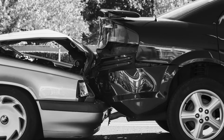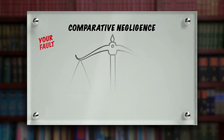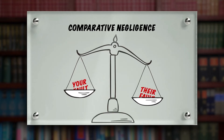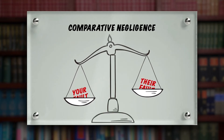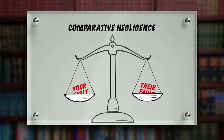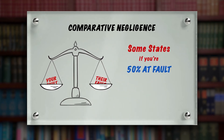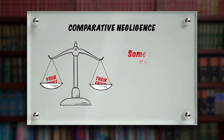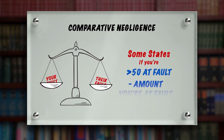In most states, a jury is asked to weigh the comparative negligence. In some states, if you're 50-50 at fault, you can't make any claim whatsoever — that's called a modified comparative negligence state. In others, you could be more than 50% at fault, but your damages are going to be reduced by the amount of your fault.